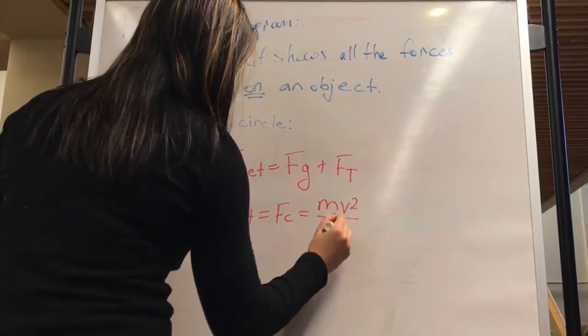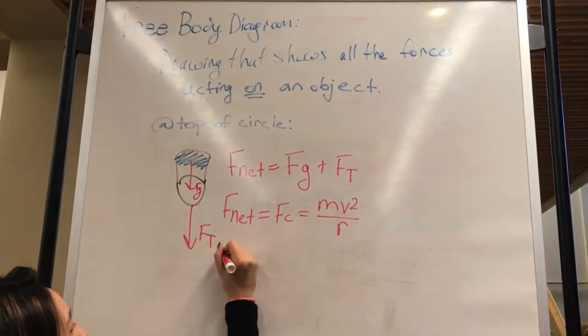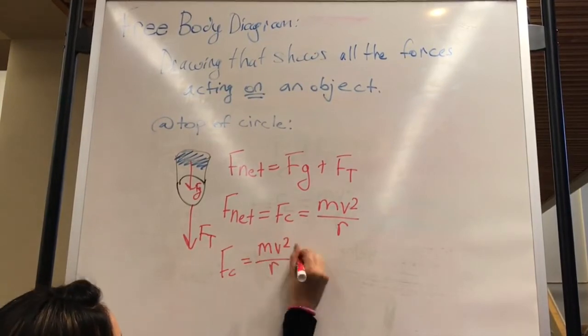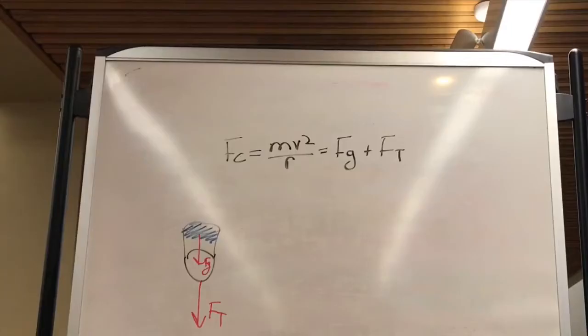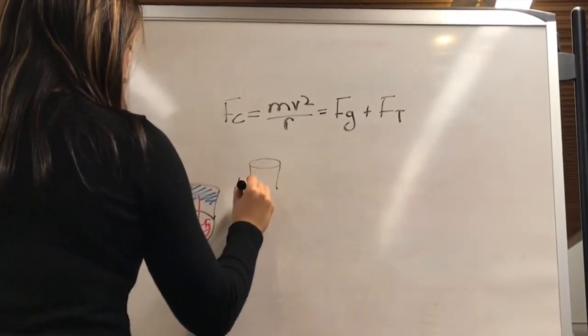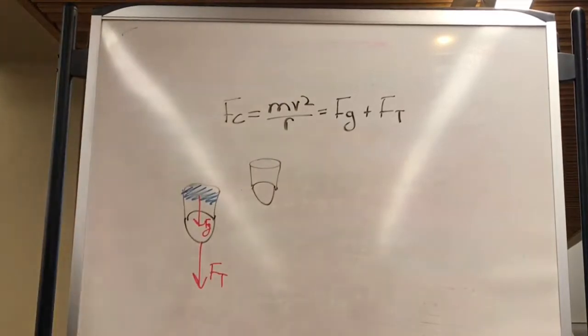Using Newton's second law, we can write that the mass of the bucket and the water times the acceleration of the bucket, v squared divided by r, is equal to the force of gravity plus the force of tension. The centripetal force we set equal to the force of tension plus the force of gravity, as they are pointing in the same direction.